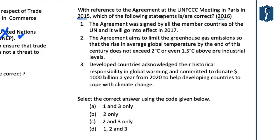Statement 1: the agreement was signed by all the member countries of the United Nations and it will go into effect in 2017. Statement 2: the agreement aims to limit greenhouse gas emissions so that the rise in average global temperature by the end of this century does not exceed two degrees Celsius or even 1.5 degrees Celsius above pre-industrial levels. Statement 3: developed countries acknowledge their historical responsibility in global warming and committed to donate a thousand billion dollars — around a trillion dollars a year from 2020 — to help developing countries cope with climate change.